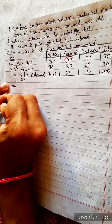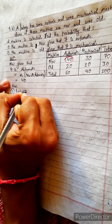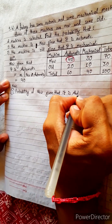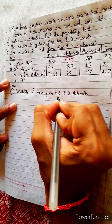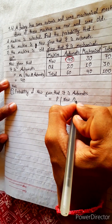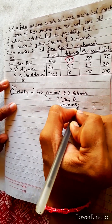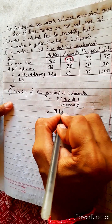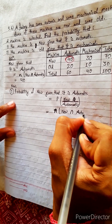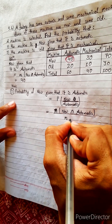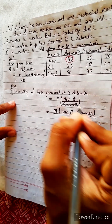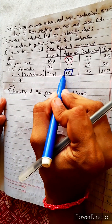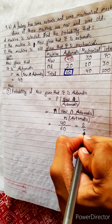Probability. Let's solve number one. Probability of new given that it is automatic. The formula is: number of new intersection automatic divided by number of automatic machines. New intersection automatic is 40, and total automatic is 60. So 40 by 60 — cancel zeros — equals 2 by 3.